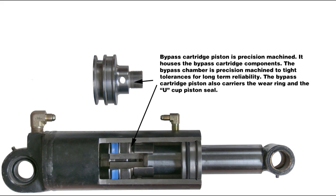The bypass cartridge piston is precision-machined. It houses the bypass cartridge components. The bypass chamber is precision-machined to tight tolerances for long-term reliability. The bypass cartridge piston also carries the wear ring and the U-cup piston seal.